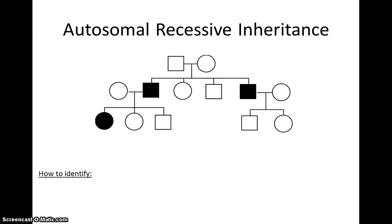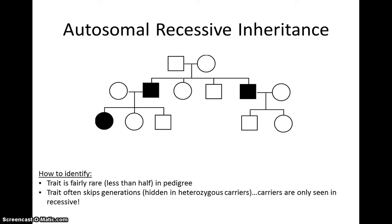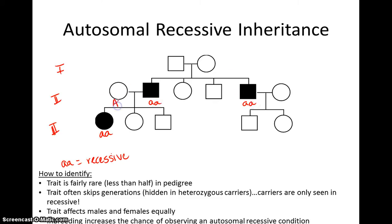Moving on to autosomal recessive. We know this is autosomal recessive because the trait appears in less than half the individuals, it skips generations, and both males and females are affected. If individuals have the trait, they have the recessive trait, so they will be little a, little a. All the unaffected individuals must have the dominant allele, so they're all big A something, and we'll go back to figure out what that second allele is.